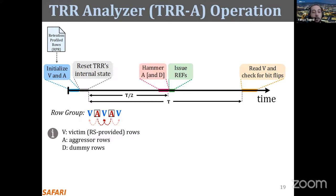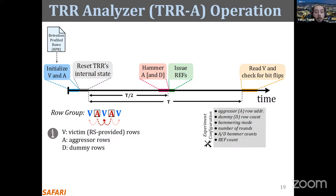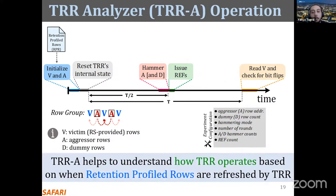To analyze how accessing an aggressor row affects which rows TRR detects as aggressive, TRR analyzer activates and precharges the aggressor row, hammering it with an individual hammer count so the analyzer can understand how hammer counts affect TRR's refresh decision. Along with aggressor rows, TRR analyzer can also use dummy rows to analyze how to make aggressor rows undetected by TRR. A dummy row is simply a randomly selected row in the same bank that is neither an aggressor nor a victim row. TRR analyzer provides various configuration parameters to study various access patterns, and overall the user understands how a certain TRR mechanism operates based on when it refreshes which retention profile rows.